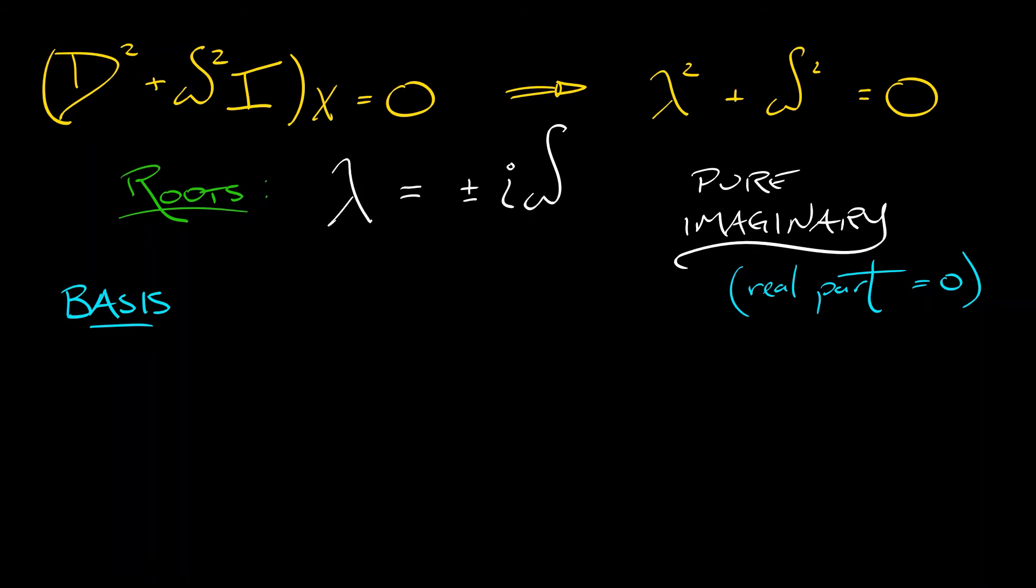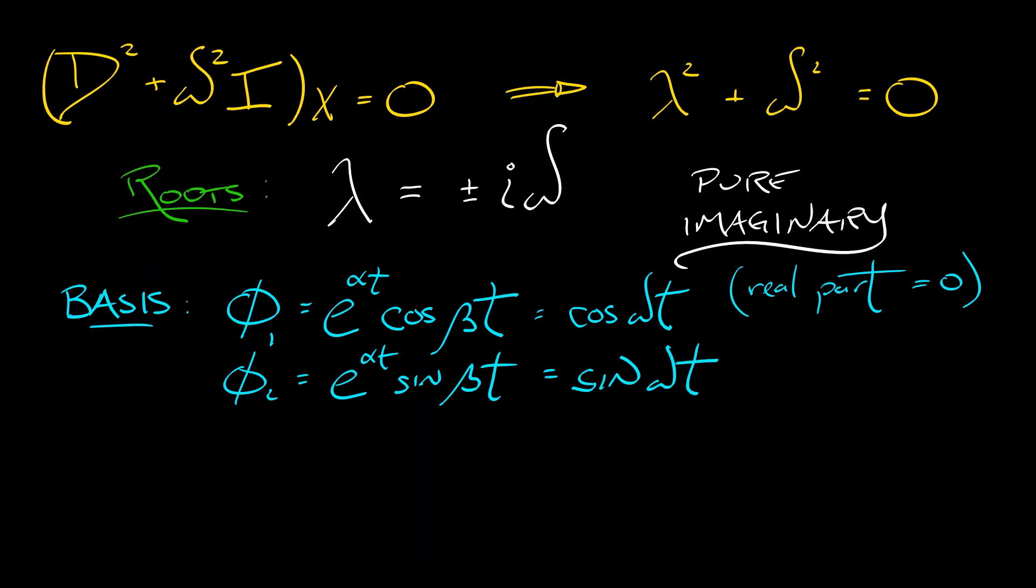Remember, when you've got complex roots, then your basis solutions are φ₁ = e^(αt)cos(βt), where alpha is the real part, beta is the imaginary part. In this case, that reduces to cos(ωt). The second basis solution φ₂ is e^(αt)sin(βt). That becomes sin(ωt).